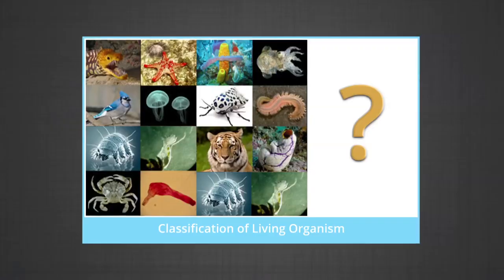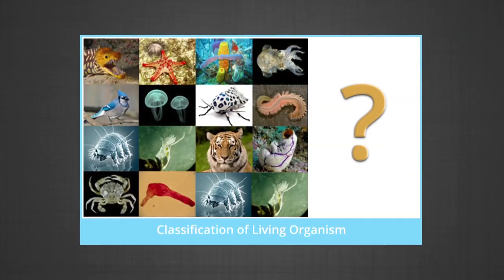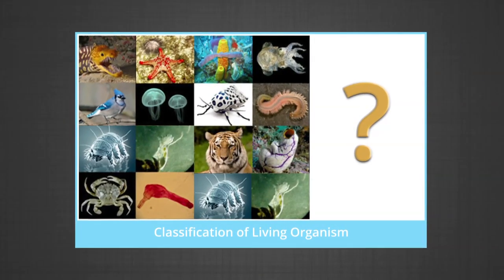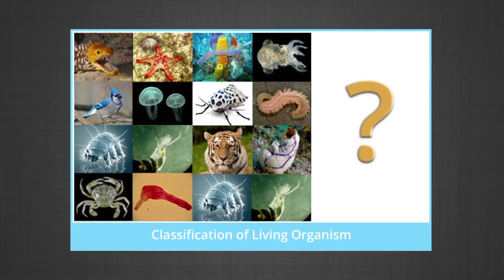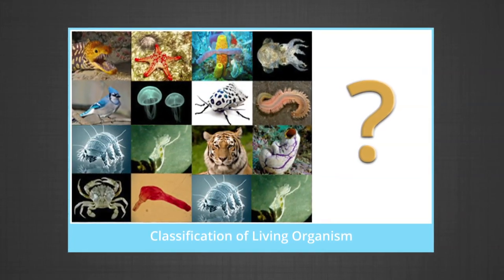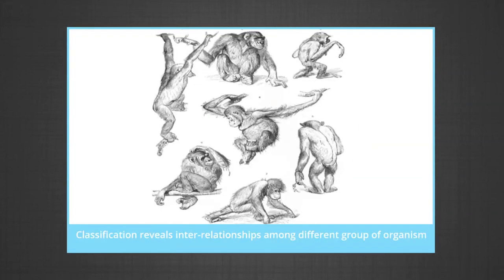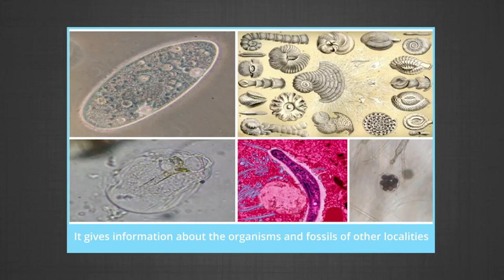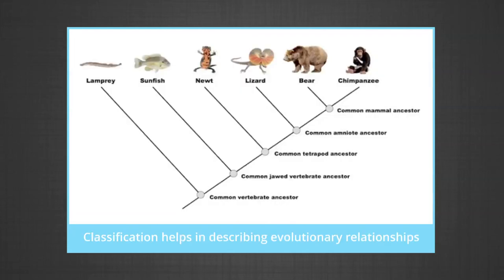The need for classification: organisms should be classified for the following reasons. First, classification makes identification and the study of a wide variety of biological organisms easy. Second, it reveals the interrelationships among different groups of organisms. Third, it gives information about organisms and the fossils of their other localities. Fourth, it also describes evolutionary relationships.